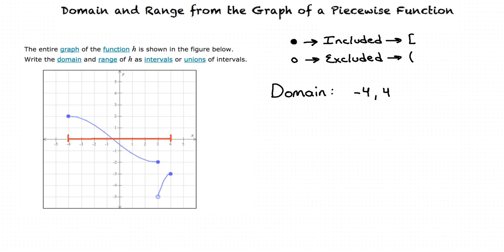Great question. We include all closed points in the interval and exclude all open points from the interval. So we place a square bracket next to negative 4 and 4, since they are both closed points.